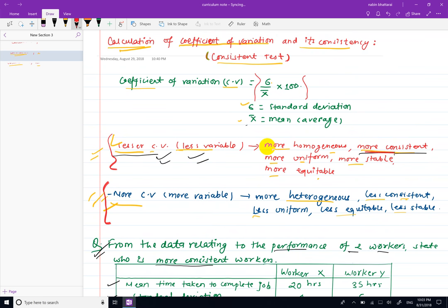Lower CV means more consistent, more uniform, more stable, more equitable, more homogeneous.